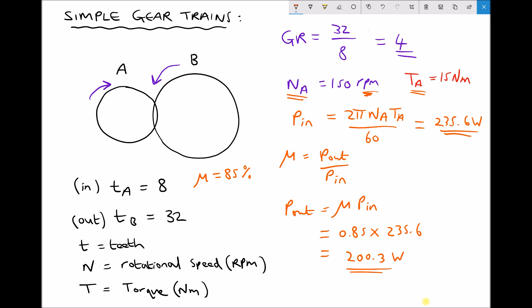So let's clear some space. Now to calculate the output torque we need to use our output power that we just calculated. We just found that the output power was 200.3 watts.